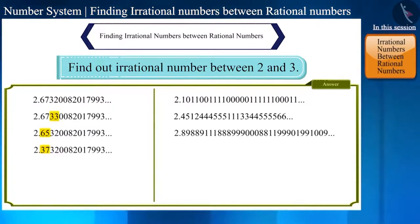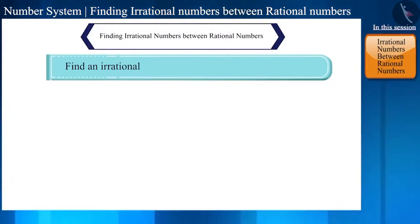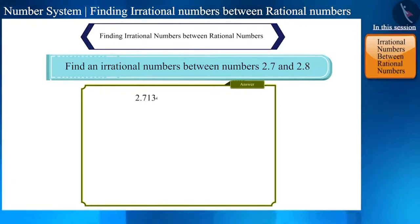The interval between 2 and 3 is very large. We can do this with even smaller intervals. For example, find an irrational number between 2.7 and 2.8. Here we can write any number after 2.7 that is neither repeated nor ends.